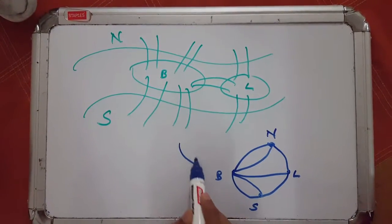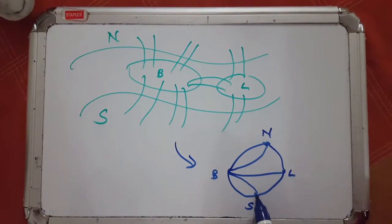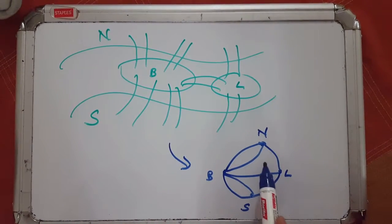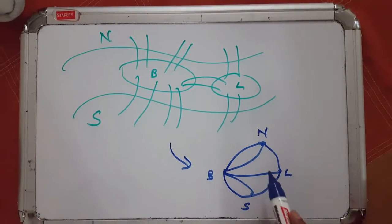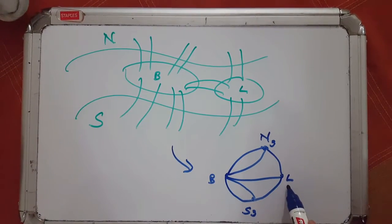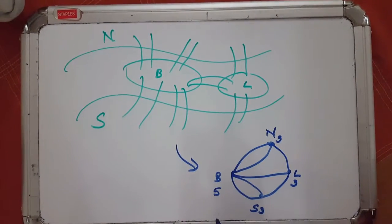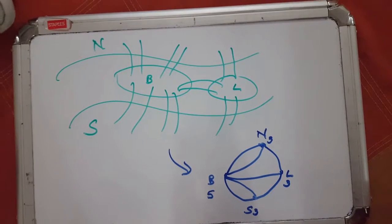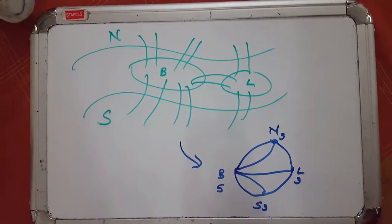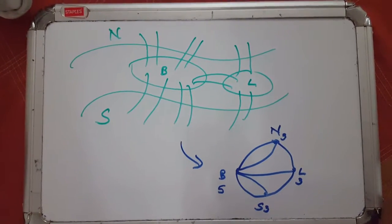Now let's get back to the original Seven Bridges of Konigsberg problem. When Euler reduced it to his diagram, he represented the north bank by a vertex, the south bank by another, and the two islands by two more vertices, with each edge representing a bridge. The degrees are: north has three, south has three, the little island has three, and the big island has five. You have four odd vertices, and therefore this problem cannot be solved — you cannot traverse all the bridges exactly once without retracing at least one.